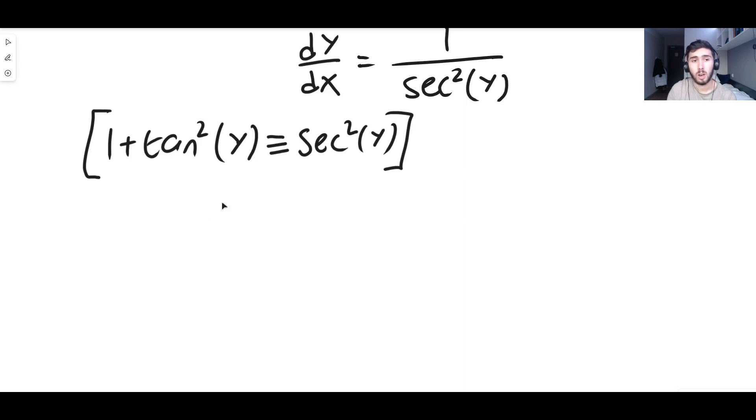You can clearly see here you just get this formula, which is very nice. And what this means is we can replace sec²(y) up here with one plus tan²(y) because they're the same thing. So we can say that dy/dx is equal to one over not sec²(y) but one plus tan²(y).